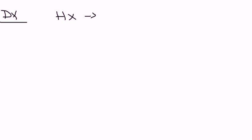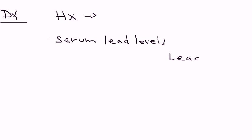How do you diagnose lead poisoning? A lot of it is based on clinical symptoms and history — that the patient has lived in an old house or has had exposure to lead of some sort. The first thing to do is a serum lead level. Normal levels are less than five, so a serum lead level greater than five micrograms per deciliter is by definition abnormal.